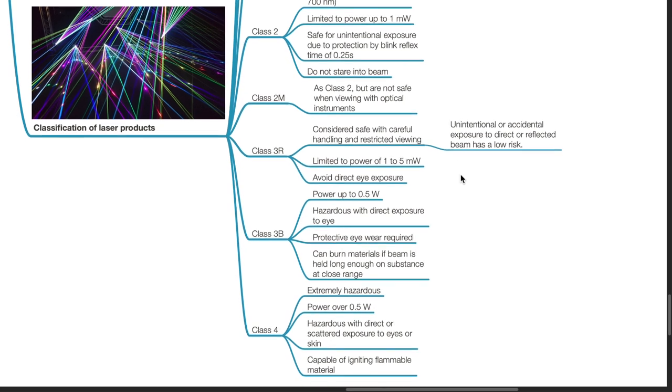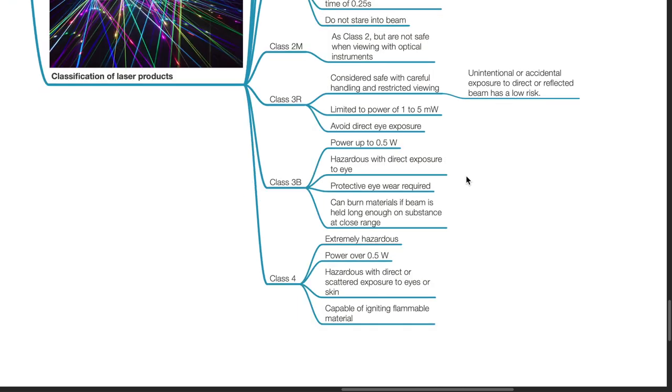Class 3R is considered safe with careful handling and restricted viewing. Unintentional or accidental exposure to direct or reflected beam has a low risk. Class 3R is limited to power of 1 to 5 mW. Avoid direct exposure to the eyes. Class 3B has a power of up to 0.5 watts. It is hazardous to direct exposure to eye. Protective eyewear is required. Class 3B lasers can burn material if the beam is held long enough on the substance at close range.